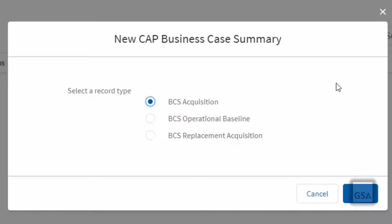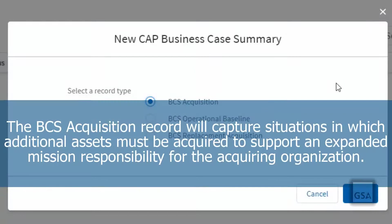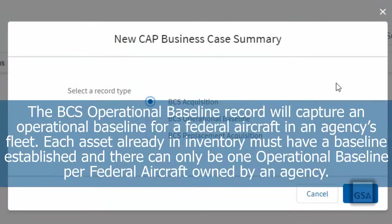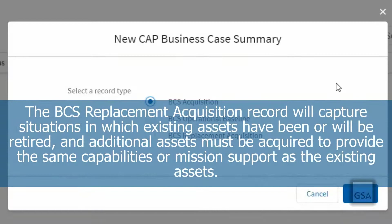After clicking the New button, you will be prompted to select a CAP Business Case Summary record type, then click Next and fill out the necessary information. The BCS Acquisition Record captures situations in which additional assets must be acquired to support an expanded mission responsibility. The BCS Operational Baseline Record captures an operational baseline for a Federal aircraft in an agency's fleet—each asset already in inventory must have a baseline established, and there can only be one operational baseline per Federal aircraft owned by an agency. The BCS Replacement Acquisition Record captures situations in which existing assets have been or will be retired and additional assets must be acquired to provide the same capabilities.